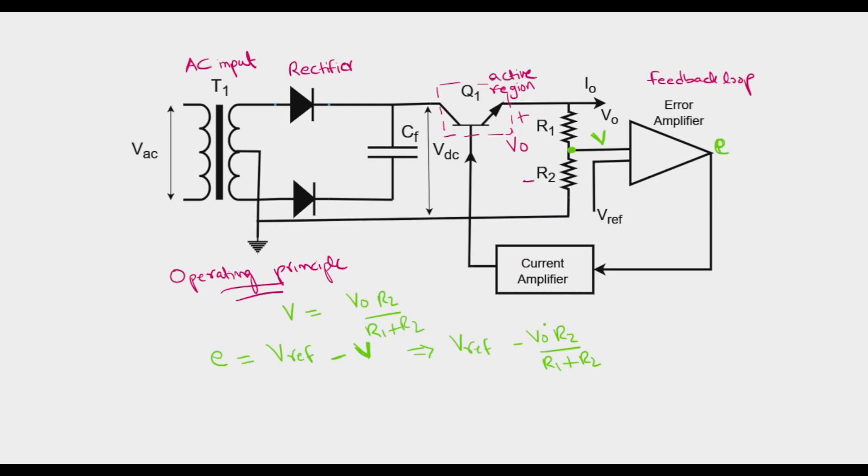Now imagine that due to a sudden load change or demand load, the output voltage V0 goes up. As V0 goes up, it means that the output of the error amplifier goes down. This output then goes to the current amplifier, which reduces its output that is the input to the base of this transistor. If this is a bipolar junction transistor, then the current IB flowing into the base of Q1 is reduced because of a reduction in the output of the error amplifier.